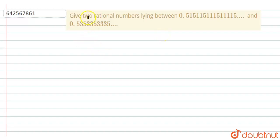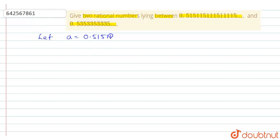The question says: give two rational numbers lying between 0.515115111... and 0.535335333... Let us assume that a is equal to 0.515115111... and b is equal to 0.535335333...